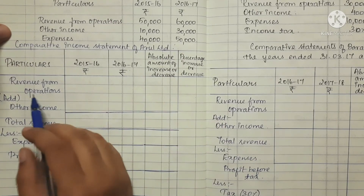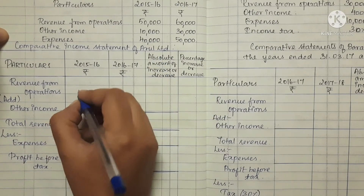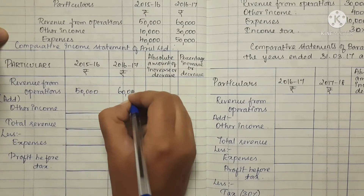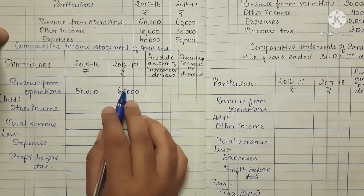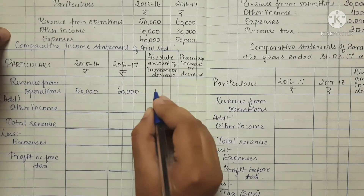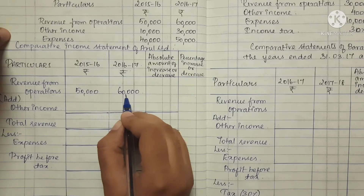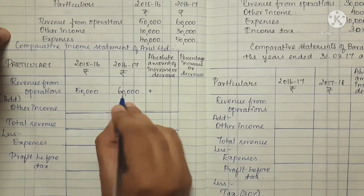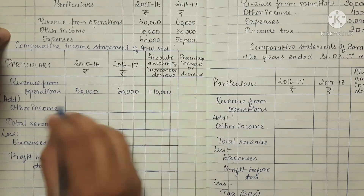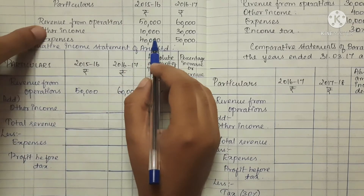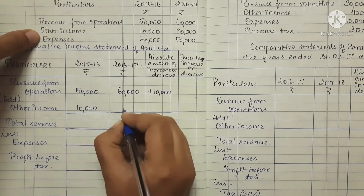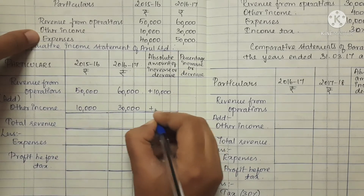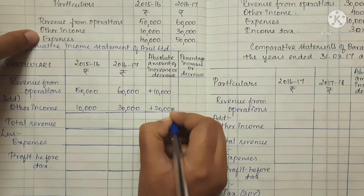The first item is revenue from operations: 50,000 in the first year and 60,000 in the second year. The difference between these two is plus 10,000. The next item is other income: 10,000 and 30,000, so the difference is plus 20,000.